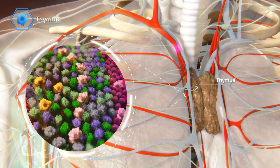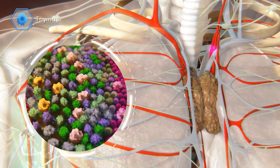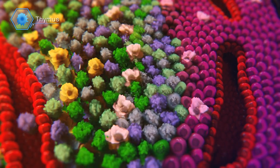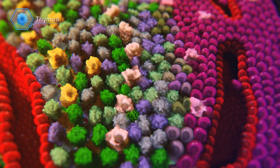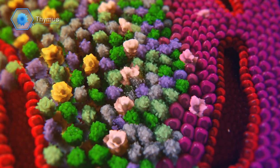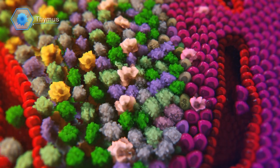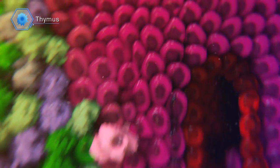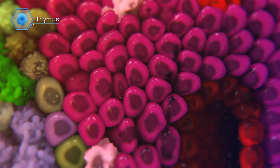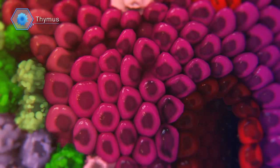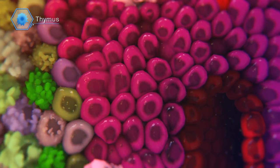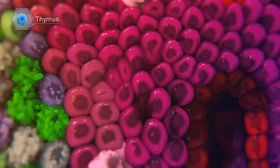Once inside the thymus, these cells proliferate to large numbers and subsequently differentiate. These differentiated T-cells express receptors created by randomly shuffling gene segments, making each cell sensitive to a specific foreign substance.